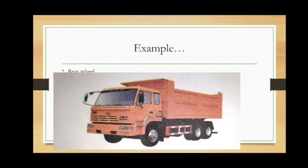The rear wheels of buses or trucks are provided with double wheels because most of the weight of these vehicles is towards their rear axle. To prevent tires from sinking into the ground or to prevent damage to roads, double wheels are provided. The double wheels increase the area of cross-section and hence decrease the pressure, by the inverse proportionality relationship.